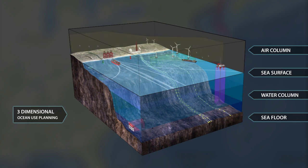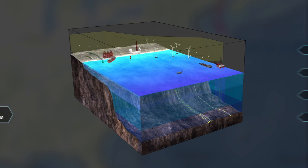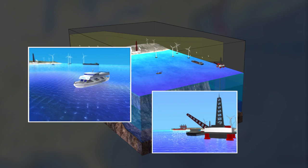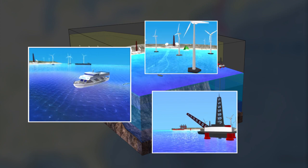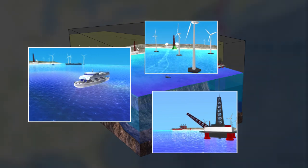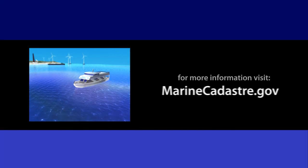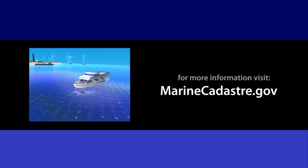Ocean planning includes conflict avoidance, so it makes sense to consider ocean data using the three-dimensional lens. And planners shouldn't forget the fourth dimension — time. Some datasets only apply to one season or specific time of day. The data needed for ocean planning and the metadata that guide their appropriate use can be found at MarineCadaster.gov.